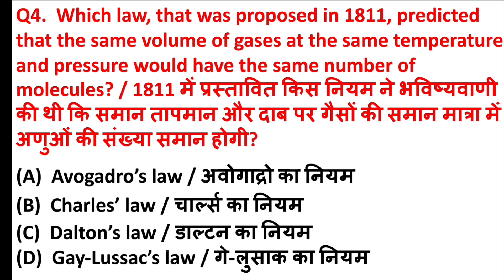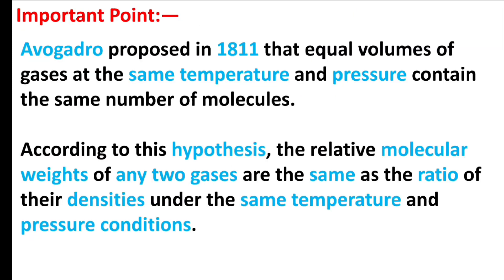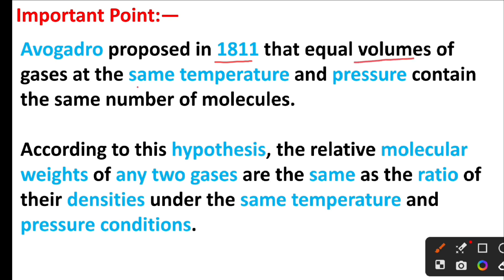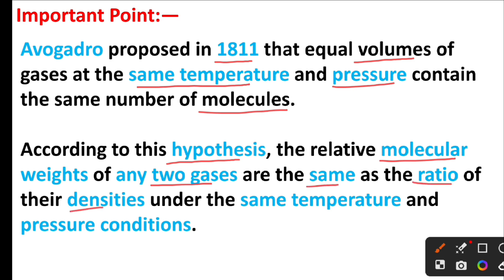Which law that was proposed in 1811 predicted that the same volume of gases at the same temperature and pressure would have the same number of molecules? According to this hypothesis, the relative molecular weight of any two gases are the same as the ratio of their densities under the same temperature and pressure conditions.